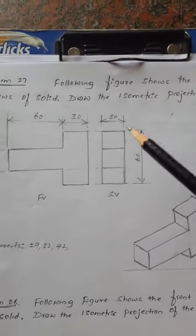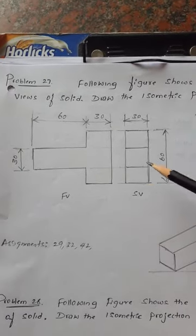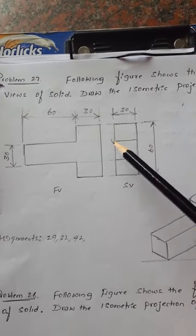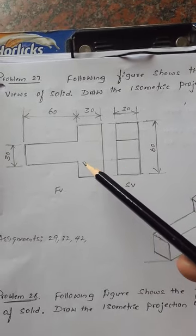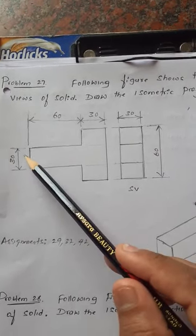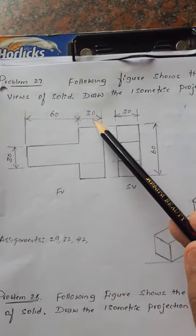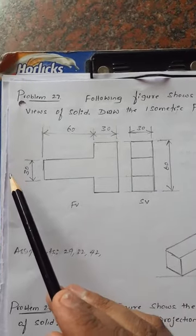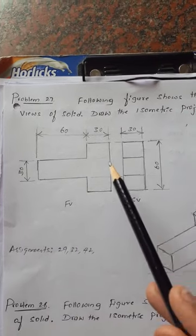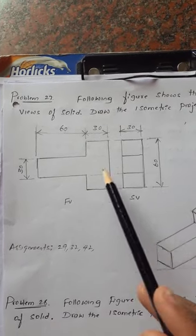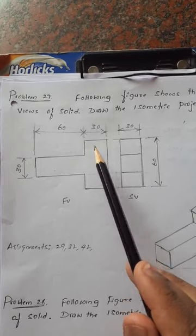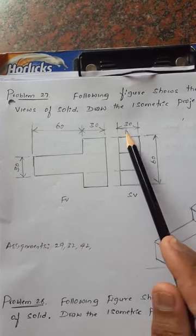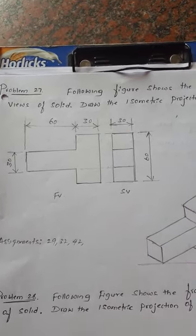This is the front view of the solid and the side view. If you see the front view, it is a T-shape. It is given dimensions 30 mm, then 60 and 30 here. If you view from this side, it looks as a rectangular box of dimensions 30 and 60 mm.